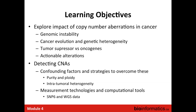The learning objectives for this module are: we'll have an overview of the impact of copy number aberrations in cancer; we'll discuss genomic instability, cancer evolution, and genetic heterogeneity; we'll talk about tumor suppressor genes versus oncogenes and some examples of actionable alterations. Then we'll dive into how we detect copy number aberrations, what confounding factors we have to account for—things like purity and ploidy of tumors and intratumoral heterogeneity—and strategies to overcome these. We'll finish by looking at specific measurement technologies and computational tools, focusing on arrays and whole genomes and exomes.